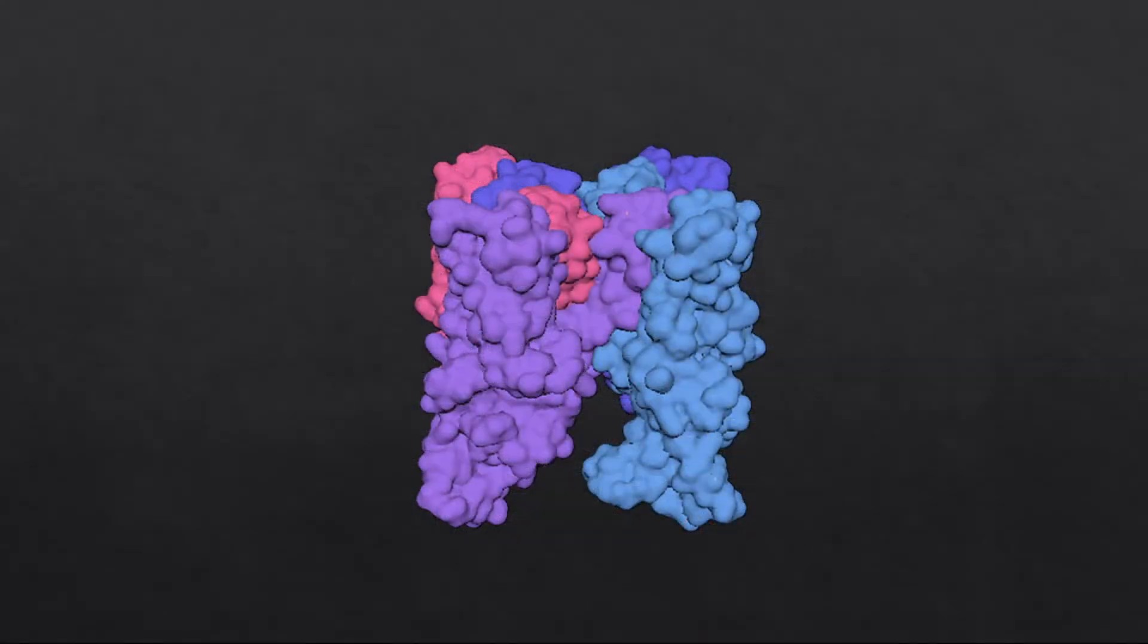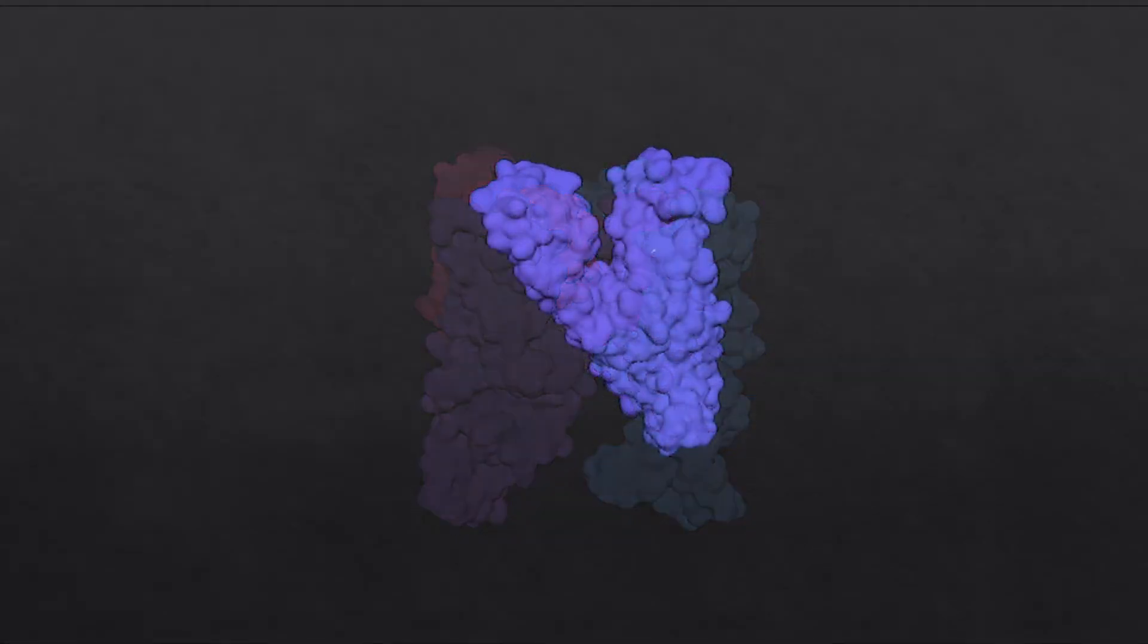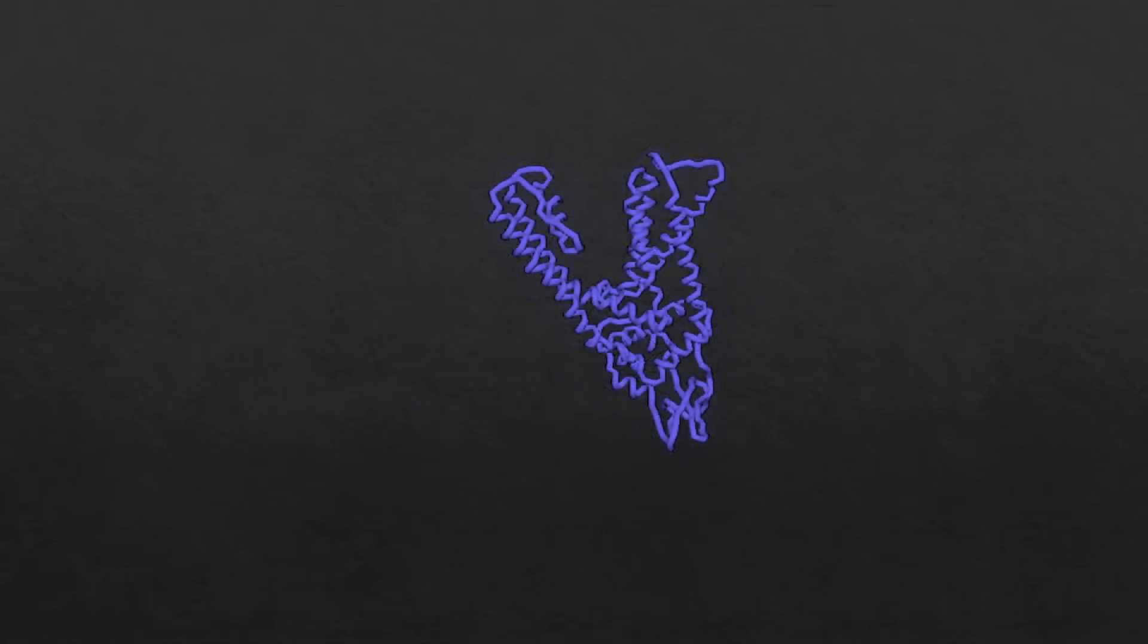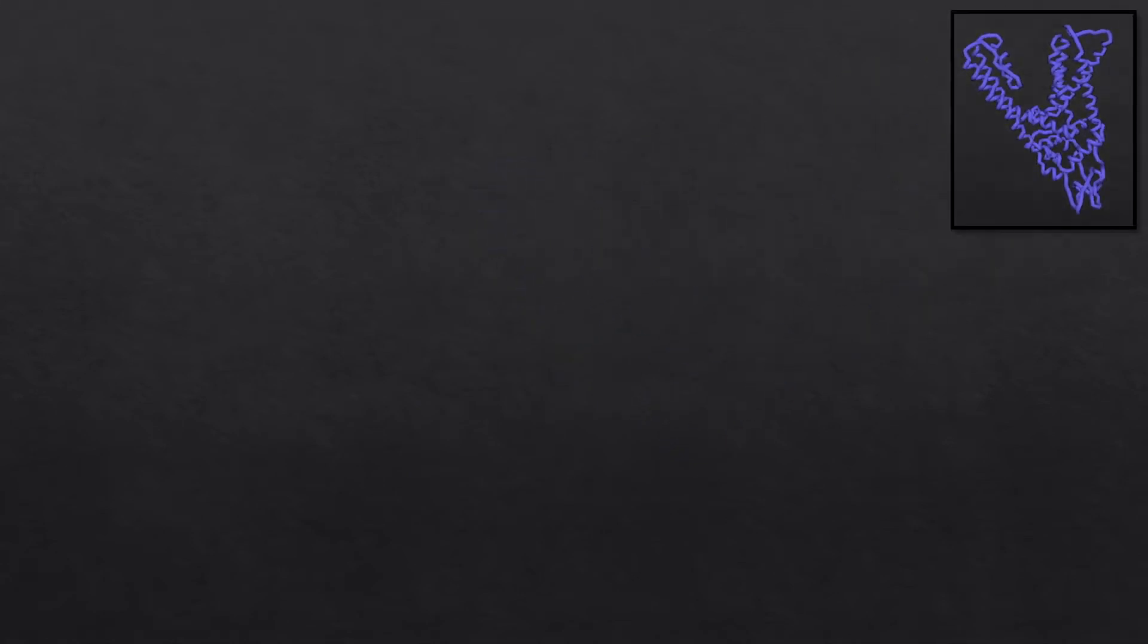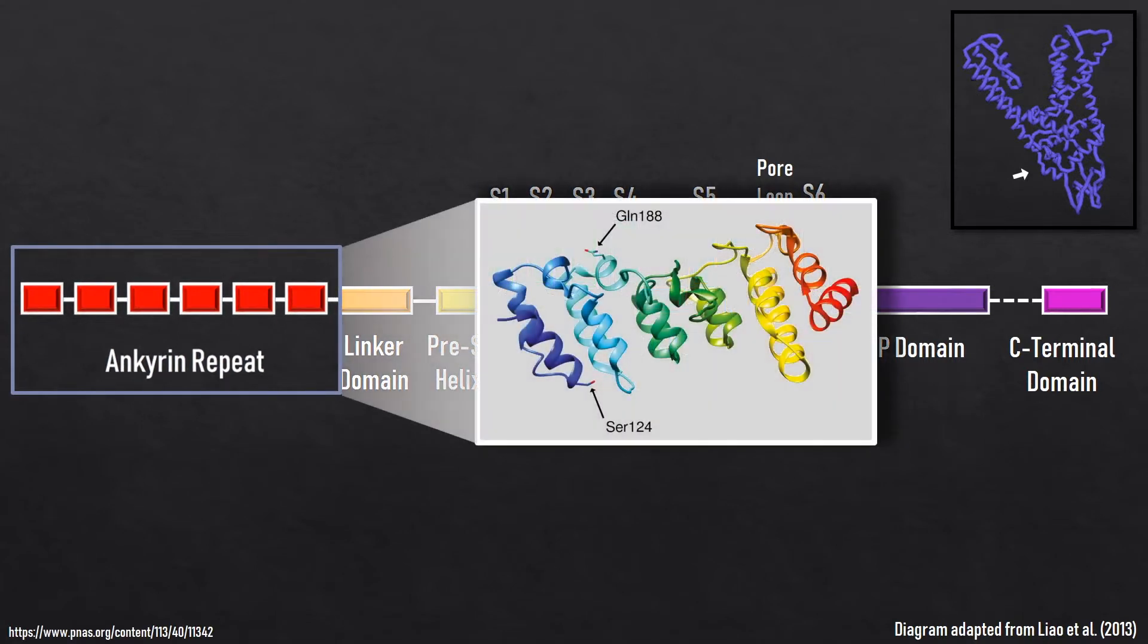The TRPV1 receptor is a transmembrane protein with four subunits. Each subunit is composed of six alpha helices, S1 through S6. At the end terminus is an ankyrin repeat domain, a 33-residue sequence believed to interact with proteins.